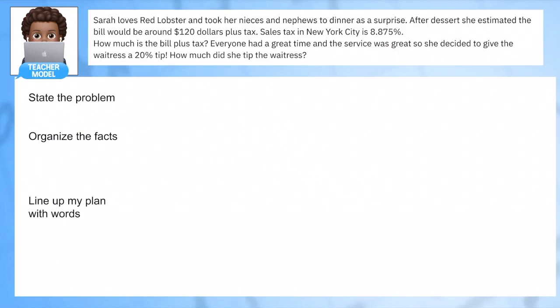Here's our second problem, based on something I did last week. Sarah loves red lobster and took her nieces and nephews to dinner as a surprise. After dessert she estimated the bill would be around $120 dollars plus tax. Sales tax in New York City is 8.875%. Everyone had a great time and the service was great, so she decided to give the waitress a 20% tip.